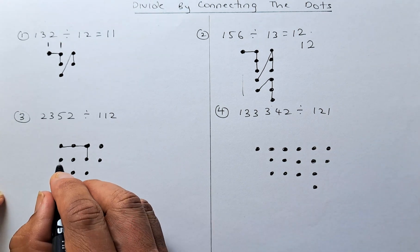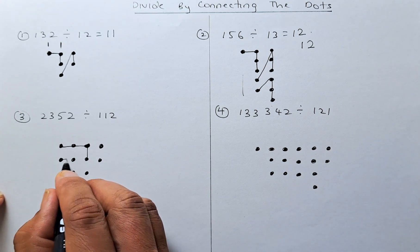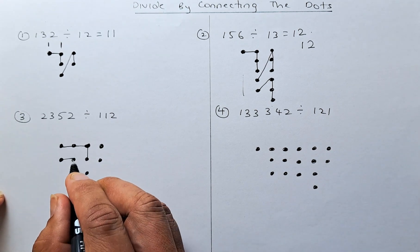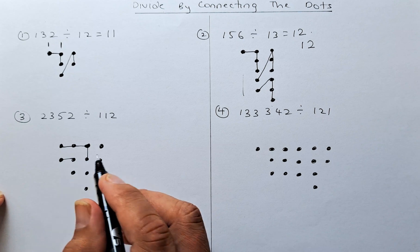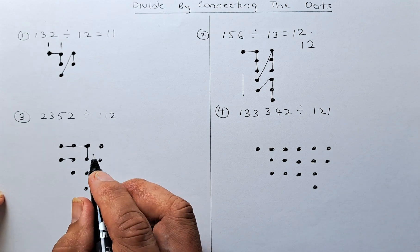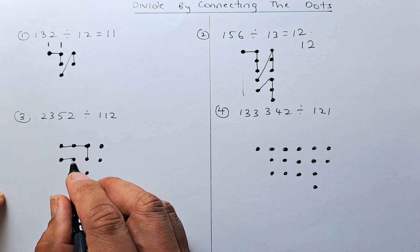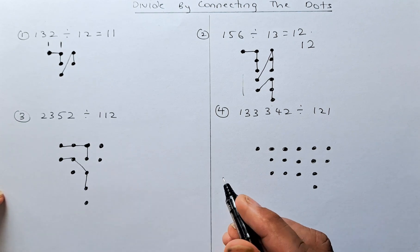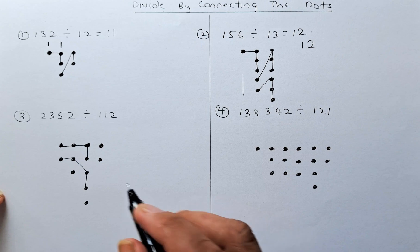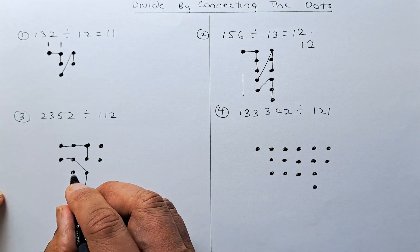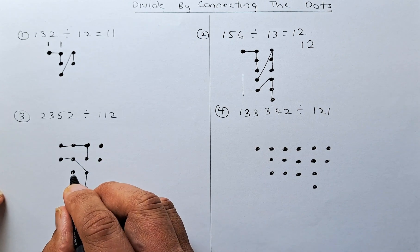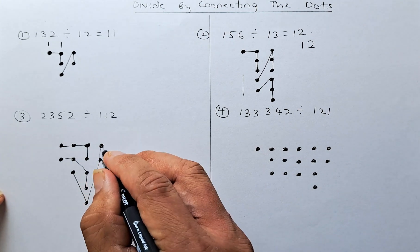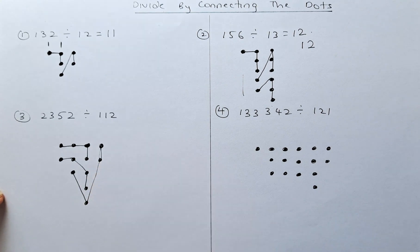For the second connection, we start from here: one dot followed by two dots — one, two. And the last one: one dot followed by one dot and then two dots. That is how you do it.